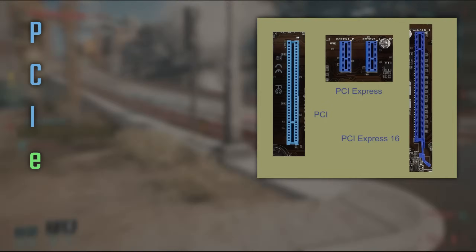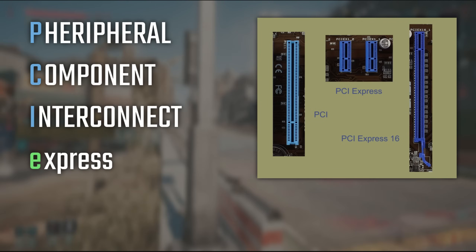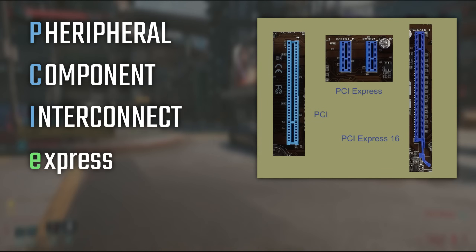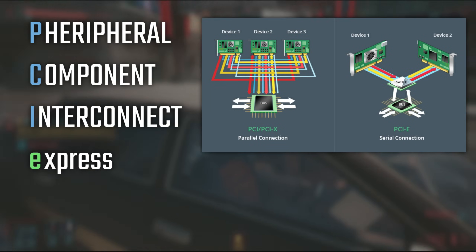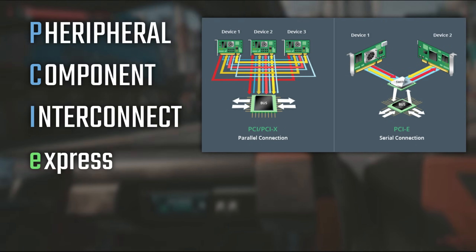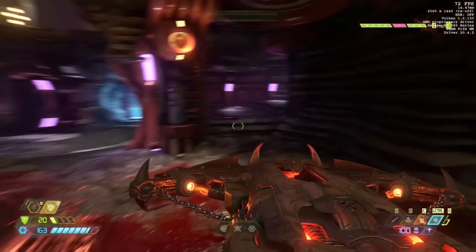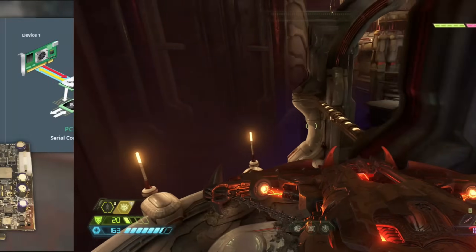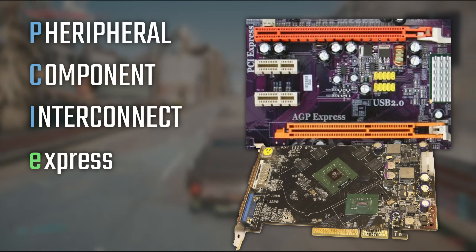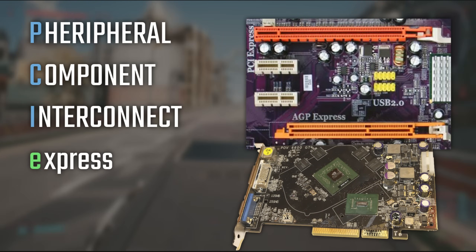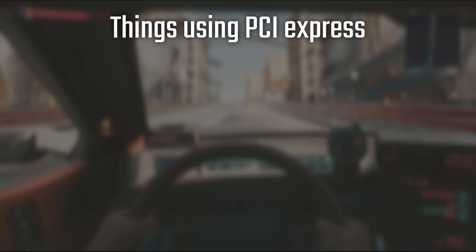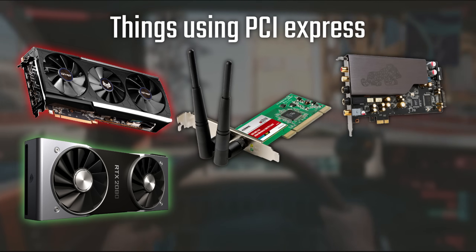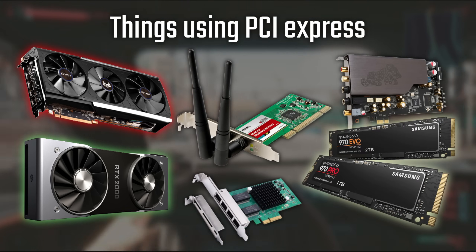PCIe means Peripheral Component Interconnect Express. It is a high-speed serial computer expansion bus standard that came to replace the older PCI, PCIx, and AGP bus standards. If you're older than 25 and you've been into PCs since childhood, you'll remember when GPUs ran in AGP slots. Nowadays we have lots of things using PCIe, like graphics cards, sound cards, wireless and ethernet cards, and even hard drives.